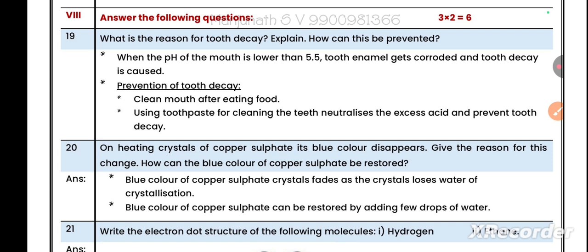Question main number 8: Answer the following questions, each carrying two marks, total three questions for six marks. Question 19: What is the reason for tooth decay? Explain how it can be prevented. When the pH of mouth is lower than 5.5, tooth enamel gets corroded and tooth decay is caused. Prevention of tooth decay: clean mouth after eating food, using toothpaste for cleaning the teeth neutralizes the excess acid and prevents tooth decay.